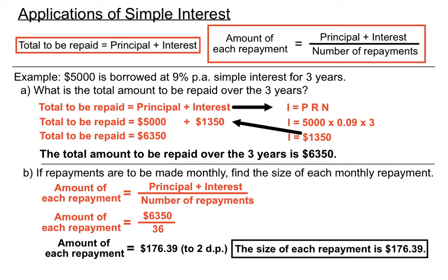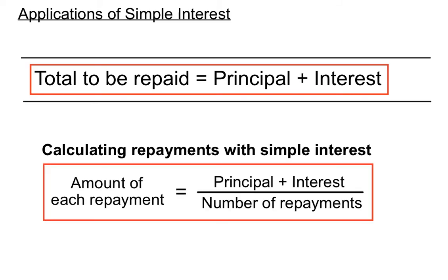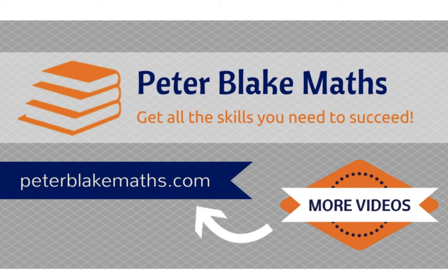To recap: the total to be repaid is the original principal we borrowed plus any interest charged, calculated using I equals PRN. For the repayment size, take the principal plus interest — the total to be repaid — and divide by the number of repayments under that loan. We've applied simple interest as part of a bigger problem about loan repayments and monthly instalments. Catch you next time at PeterBlakeMask.com. All the best with your studies.